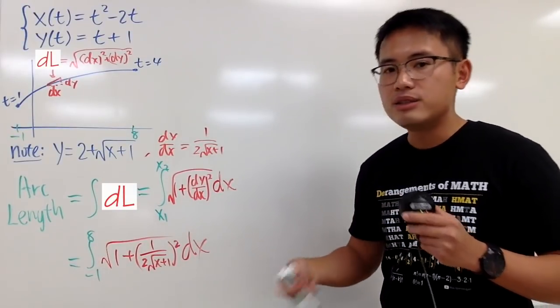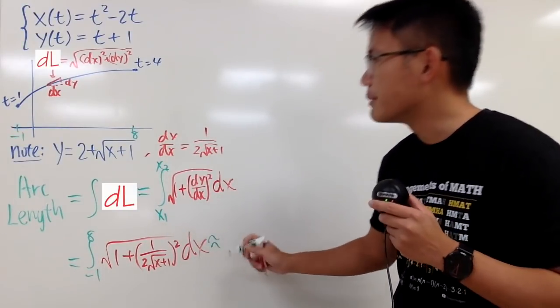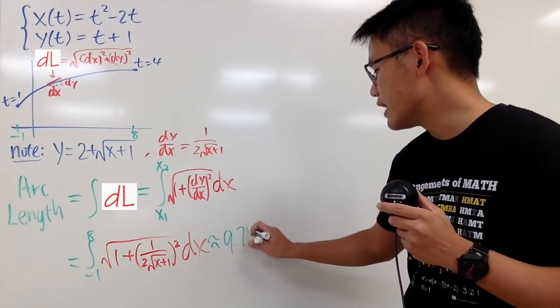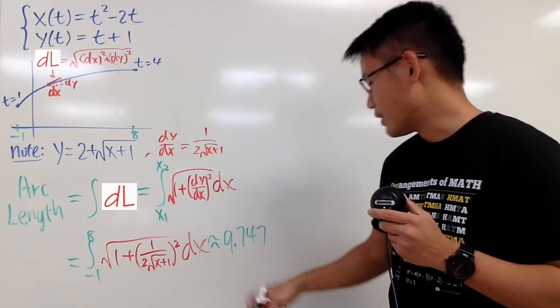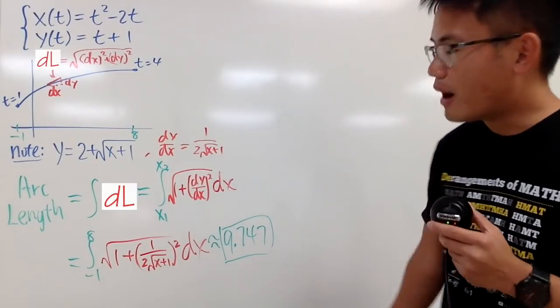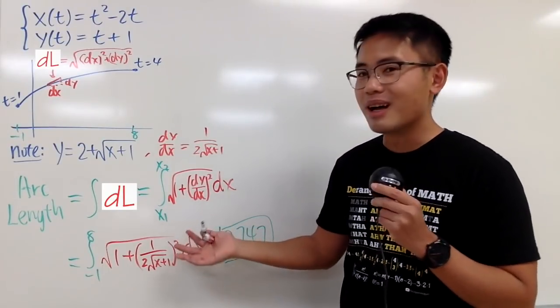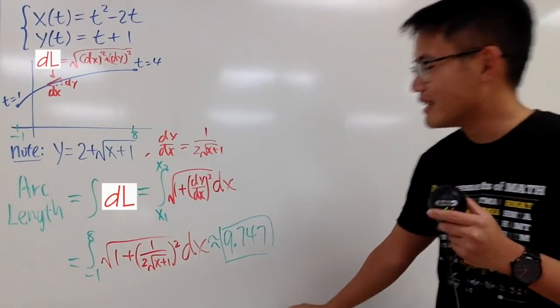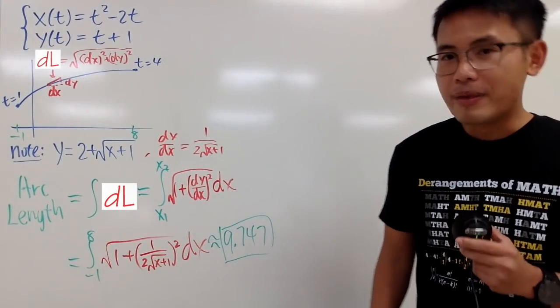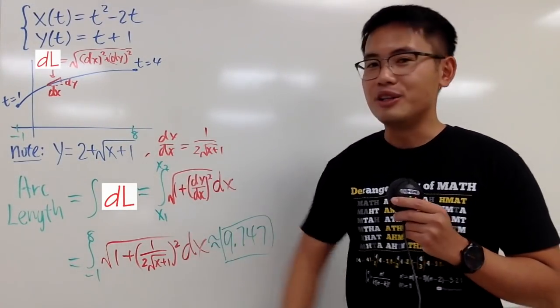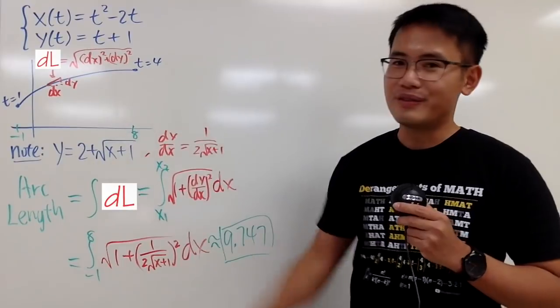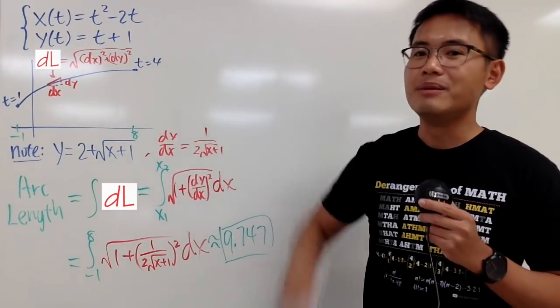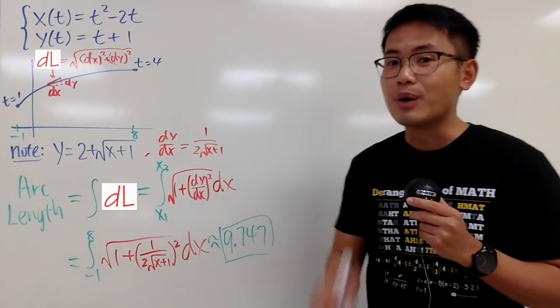And then in the end, just work everything out. You get approximately 9.747. So I'm not going to do this by hand, because the interesting part is to talk about the formulas, like the proof of all that. Now here's the deal. Suppose we don't have the Cartesian form for the curve. We really have to deal with the parametric equations, and this is how we are going to do it.